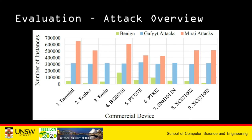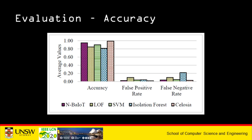These instances are benign — meaning no attack — as well as Gafgyt and Mirai botnet attacks. We compare the results of our proposed framework with current state-of-the-art techniques, including support vector machines, local outlier factors, isolation forest, and an autoencoder-based detection mechanism. Since the dataset is not balanced, accuracy alone may not be enough — we also need to ensure we produce the lowest false positive and false negative results. As you can see from the graph, the average accuracy provided by our framework is higher than the other techniques while minimizing both false positive and false negative rates.